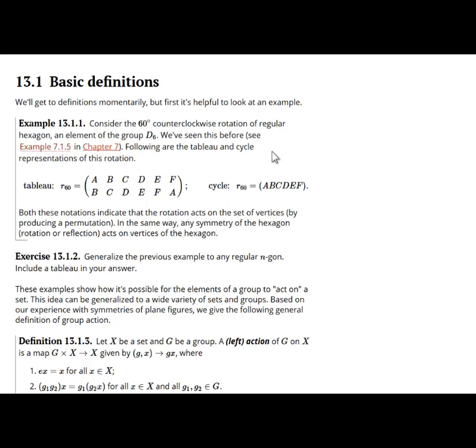Now, if we wanted to rotate that hexagon counterclockwise 60 degrees, the A would go to B, the B would go to C, and so on. But we could express that rotation in this tableau form. This is something we saw before in chapter 7.